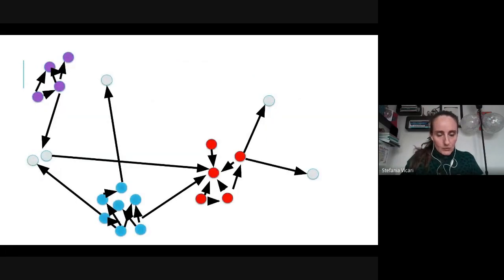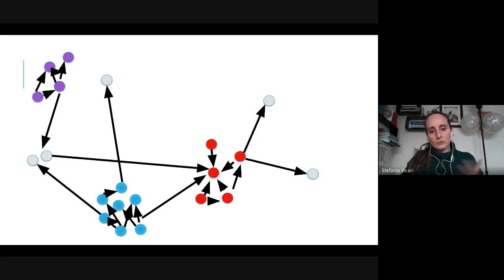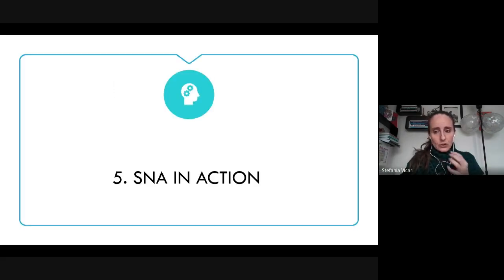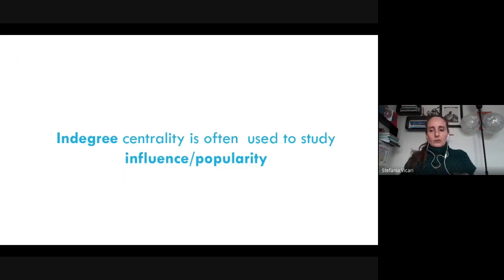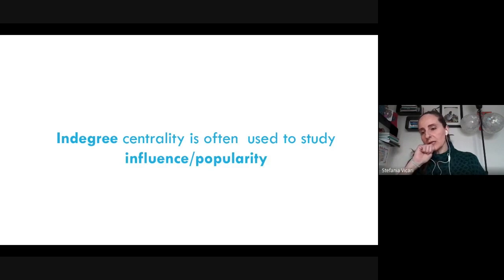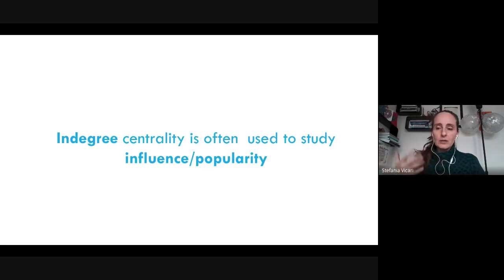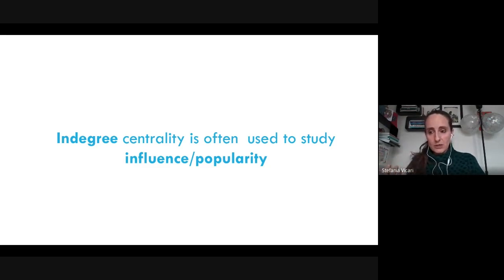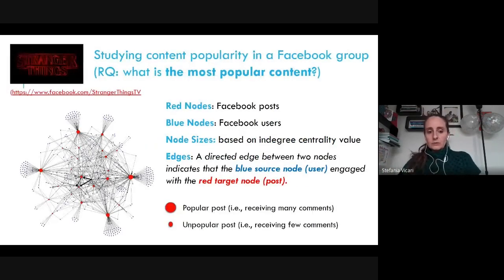Modularity is often represented by coloring subgroups with different colors in the visualization. To close this section, in-degree centrality is often used to measure influence or popularity. All the work about influencers — now more often called creators — and the impact of sometimes called gatekeepers in social media research, uses some sort of in-degree centrality measure to map influence.